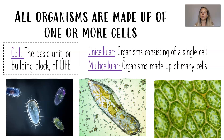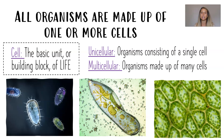Let's start with the most basic characteristic of life: all organisms are made up of one or more cells. A cell is the basic unit or building block of life. If an organism is made up of just one single cell, we consider it a unicellular organism. If it's made up of many cells, we call it a multicellular organism. You can see pictures here of some unicellular organisms and some multicellular organisms — all of these cells come together to make up the organism.